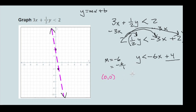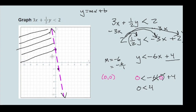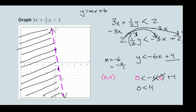If I have the point (0, 0), I substitute 0 in for y and 0 in for x: 0 is less than negative 6 times 0 plus 4. The reason I love using the origin is because zero is the magic eraser — it gets rid of the x term. So we get 0 is less than 4, which is a true statement. That means the side containing the origin is shaded.